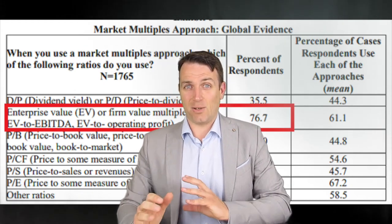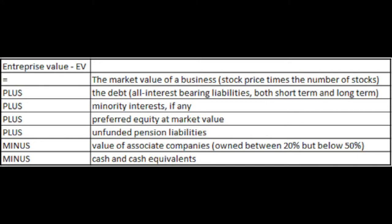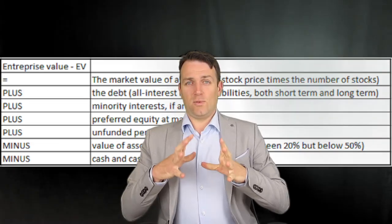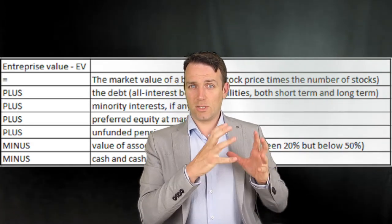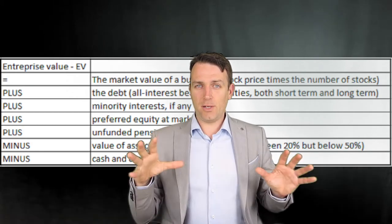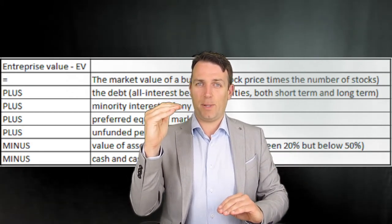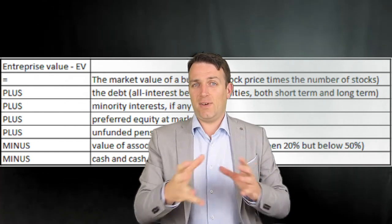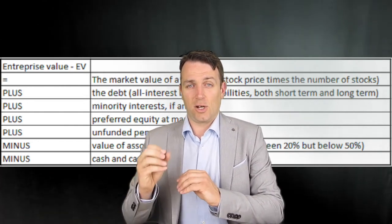Let's dig into how the metric is calculated. First, let's see what enterprise value is. Enterprise value is the market value of a business, plus the debt — all interest-bearing debt — plus minority interests if there are any, plus preferred equity at market value, plus unfunded pension liability, minus the value of associate companies, and minus the cash and cash equivalents. So enterprise value is the market capitalization plus all the debt on top of it.